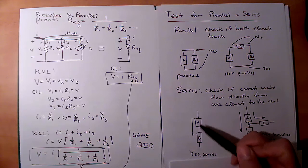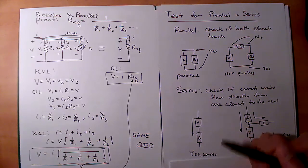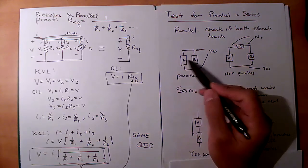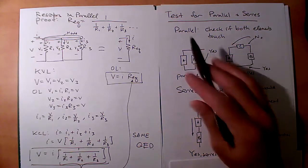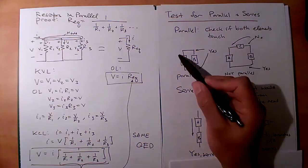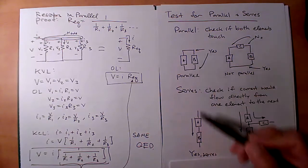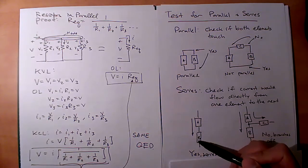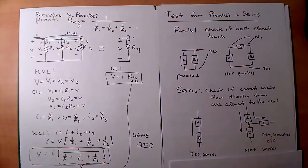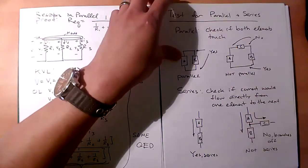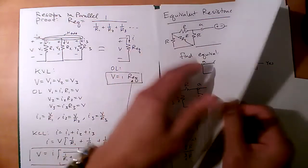Remember: all elements in series share the same current, and all elements in parallel have the same magnitude of voltage. The signs might differ depending on polarity labeling, but the magnitudes are equal. You can use KVL and KCL to prove that.